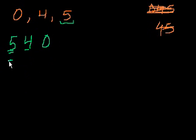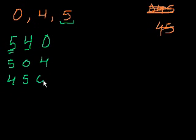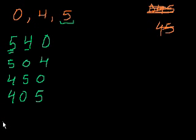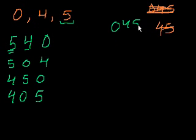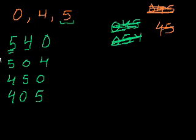So we get 540, and that's going to be the largest. The other combinations are: just switching the 4 and the 0, we get 504. Or we could switch the 4 and the 5 to get 450. Or switch the 5 and the 0 to get 405. The other two permutations would start with 0, so those don't count. So 540 is the largest — we know 540 is larger than 504 because 40 is larger than 4.